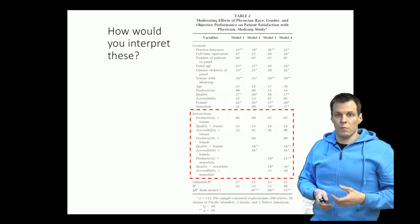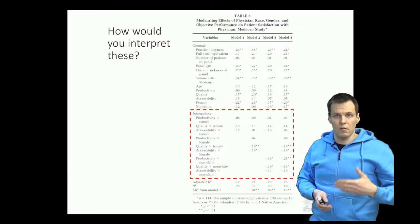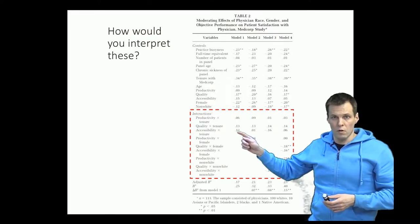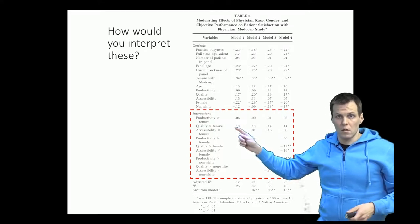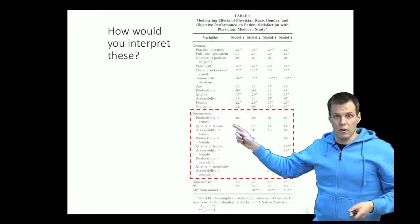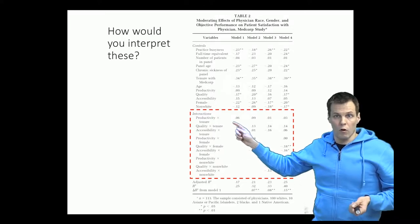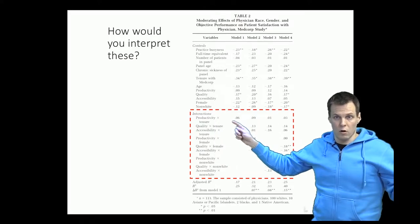We cannot interpret that ceteris paribus because interpreting ceteris paribus, keeping all other factors constant, means that we would increase this interaction term while keeping the first order terms that form the interaction constant. So we can't say that productivity and quality, their interaction, results in certain increase of customer satisfaction holding productivity and tenure constant.